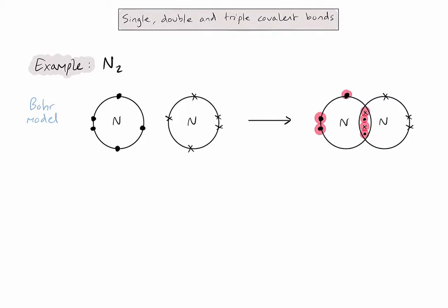So we're getting closer to eight valence electrons, but we're not there yet. So let's try one more in this case. Let's try sharing three pairs of electrons between them. And now counting the electrons on the left, I've got eight electrons.